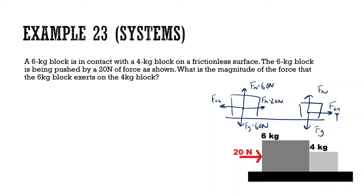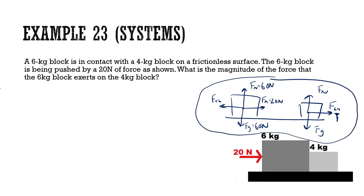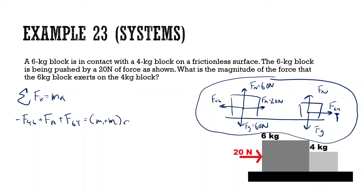Sum of all forces in x: negative F4-on-6 plus force applied plus F6-on-4 equals M1 plus M2 times acceleration. The internal force pair F4-on-6 and F6-on-4 cancel out.